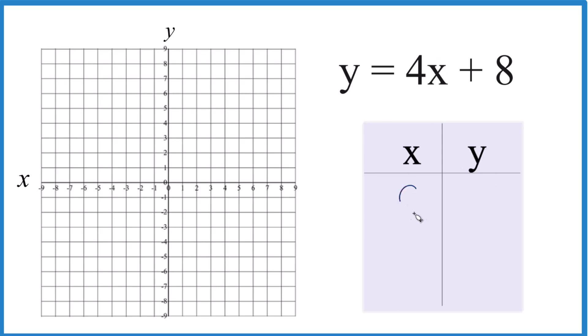I'm going to start with 0, because 4 times 0, that's 0, and 0 plus 8 would give me 8. And I'm just making numbers up that I think will fit on the graph here.